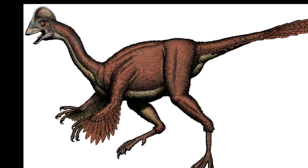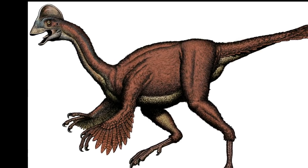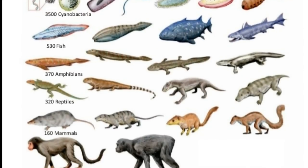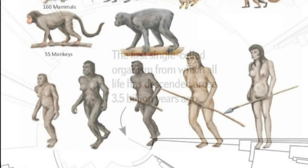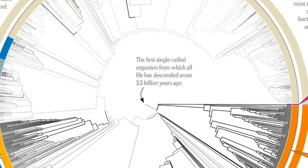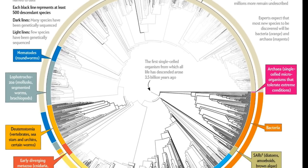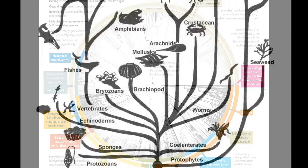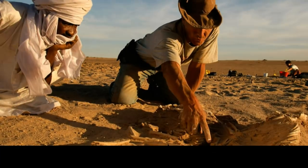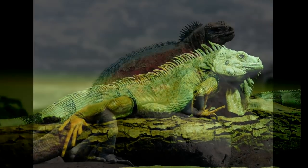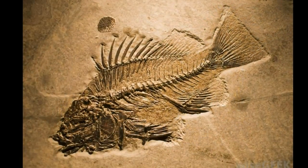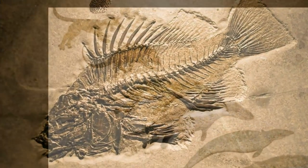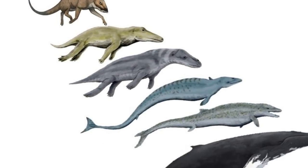Another prediction of evolutionary theory is the existence of transitional forms — species possessing characteristics of both what they evolved from and what they evolved into. If all life evolved from a common ancestor, then transitional species would have to exist for each fork in the evolutionary tree. They wouldn't be easy to find, since a speciation event often occurs with just a very small population over a geologically short period of time, and fossilization is exceedingly rare. But transitional species must exist.